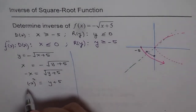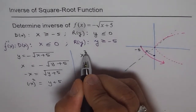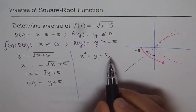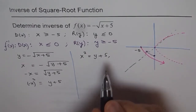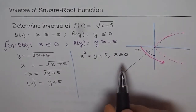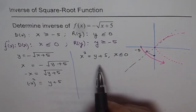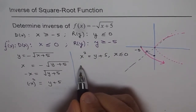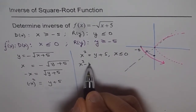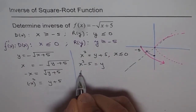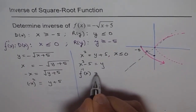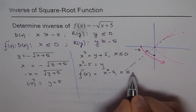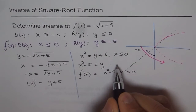At this stage we can write x² = y + 5, but we must implement our restriction, which is x ≤ 0. That is the truly correct way of doing it. Now solving for y, we get y = x² - 5, and we can write f⁻¹(x) = x² - 5 where x ≤ 0. The same restriction carries through.